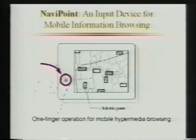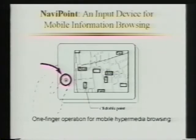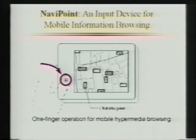NaviPoint is a new input device for hypermedia browsing on small handheld mobile devices. It allows users to perform three types of input: analog input for arbitrary scrolling, digital input for quick pointing, and click input for selection with a single finger.